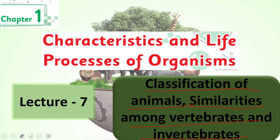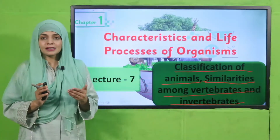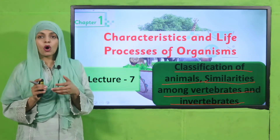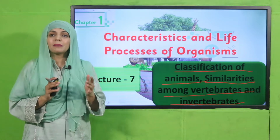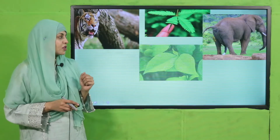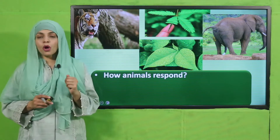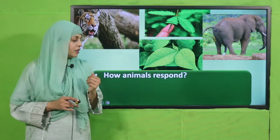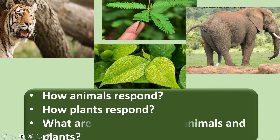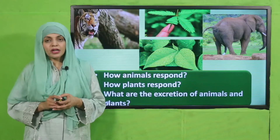My dear students, in previous lectures we discussed how many living organisms — plants and animals — have different characteristics. We also discussed how some animals can be classified on the basis of vertebrates and invertebrates, and the similarities among them. Now let's move forward with a quick recap. Look at the pictures carefully and answer: how do animals respond? How do plants respond? What are the excretion products of animals and plants?